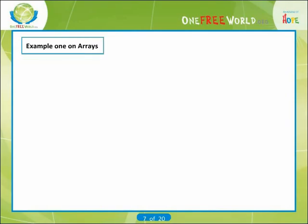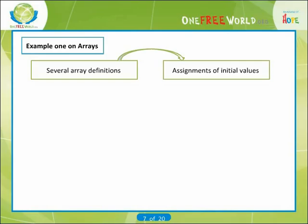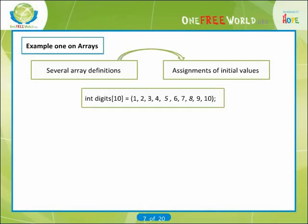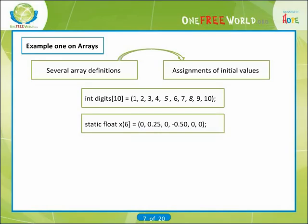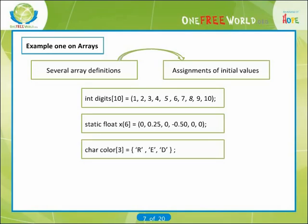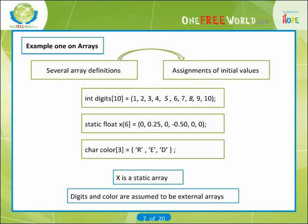Shown below are several array definitions that include the assignment of initial values: int digits[10] = {1, 2, 3, 4, 5, 6, 7, 8, 9, 10}, static float x[6] = {0, 0.250, -0.500}, char color[3] = {'r', 'e', 'd'}. Note that x is a static array. The other two arrays, digits and color, are assumed to be external arrays by virtue of their placement within the program.